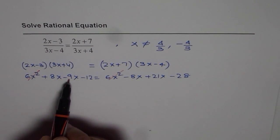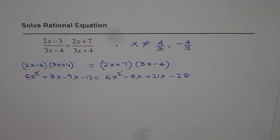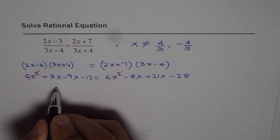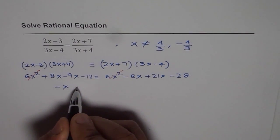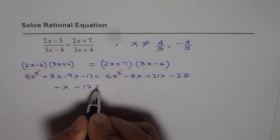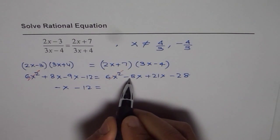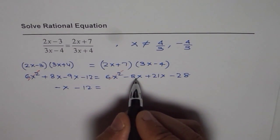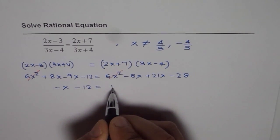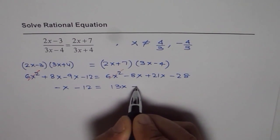So we have 8x minus 9x, which is minus x. So minus x minus 12 equals minus 8x plus 21x minus 28, which gives us minus x minus 12 equals 13x minus 28.